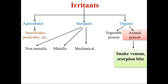Under metallic irritants, we have seen arsenic, lead, mercury, and iron. Non-metallic — we have seen phosphorus poisoning and chlorine poisoning. And then mechanical irritants — very not important — we have diamond dust and powdered glass. And then we have organic poisons, which are divided into plant poisons and animal poisons.